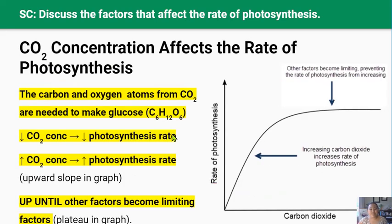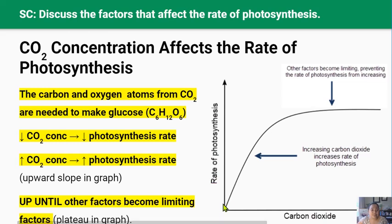Carbon dioxide is one of the raw materials needed for photosynthesis because it provides the carbon and oxygen atoms needed to make glucose, making it an important limiting factor. If the concentration of carbon dioxide in the atmosphere is low, the rate of photosynthesis will also be low. It doesn't matter how much sunlight or water is available — if carbon dioxide concentration is low, there won't be enough carbon and oxygen atoms to make glucose.